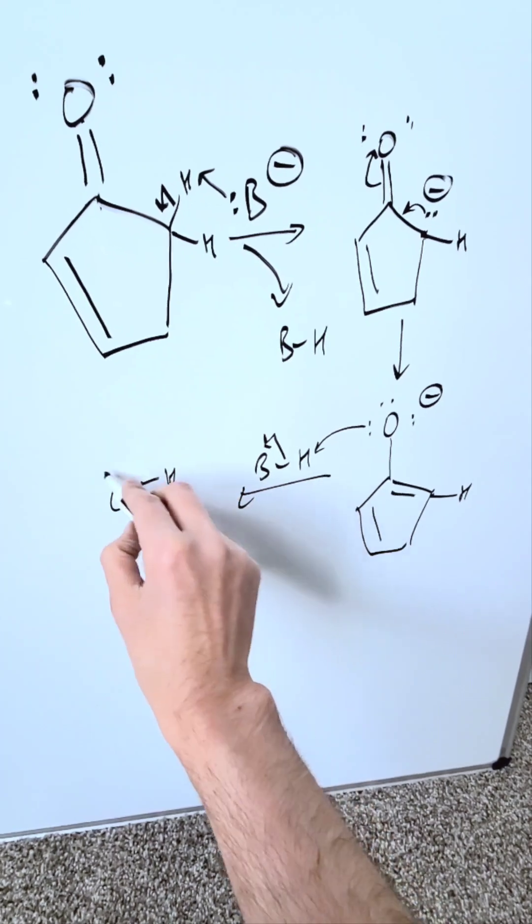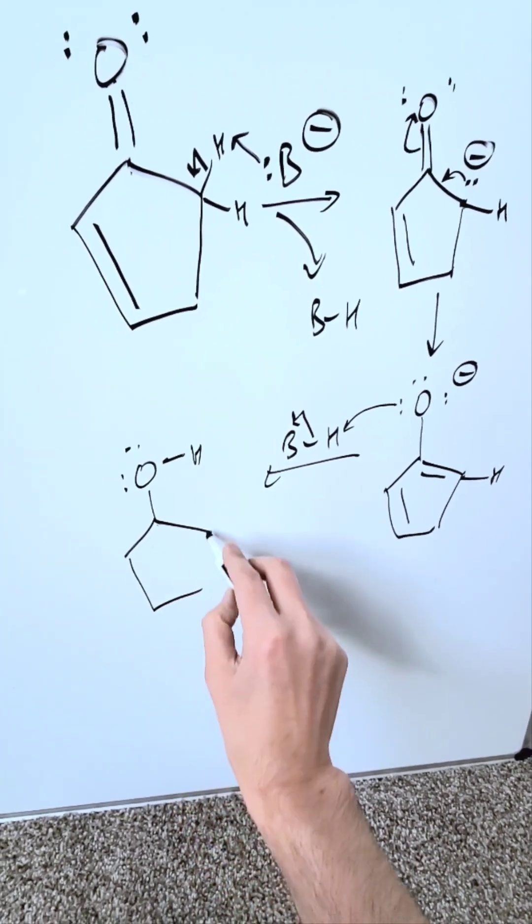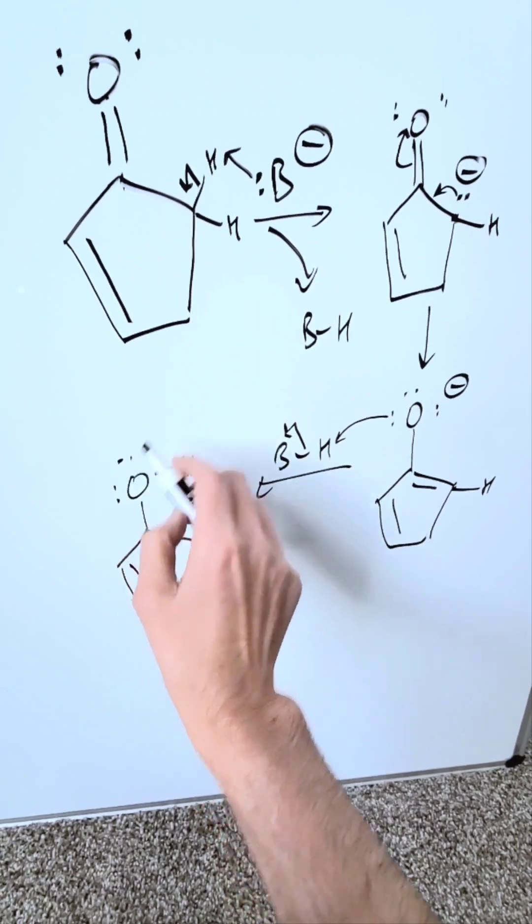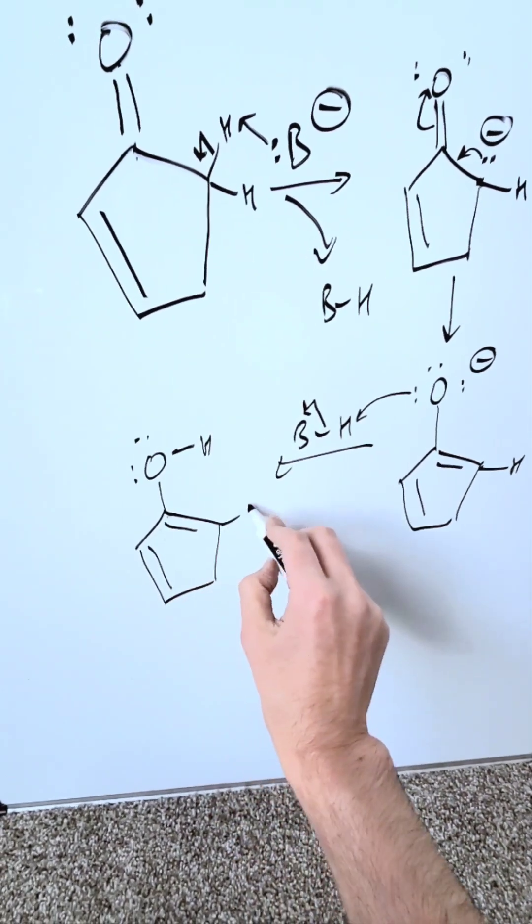And look, we've brought up a hydroxyl functionality. And look at the number of electrons which are present now on oxygen. You have four here. You have four here. Here you have six. But everything else stays as is.